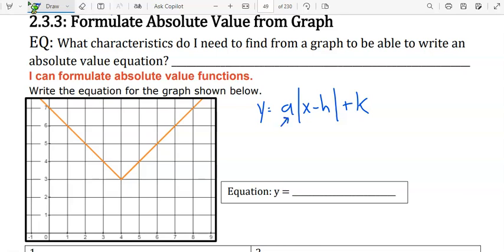is the slope of the right side of the v, so the right line, h is the x part of the vertex,